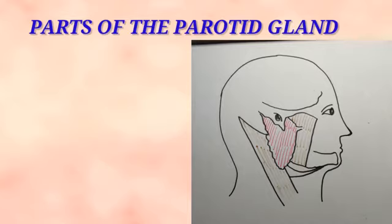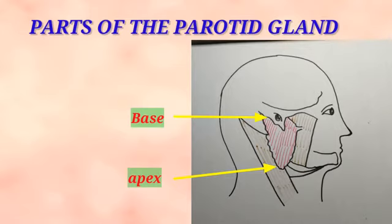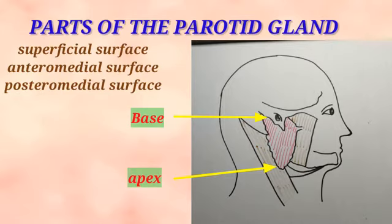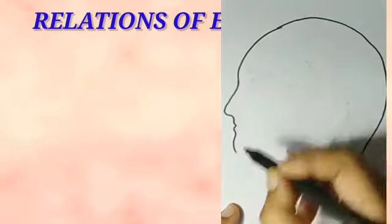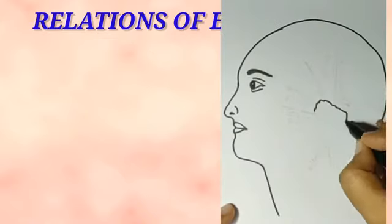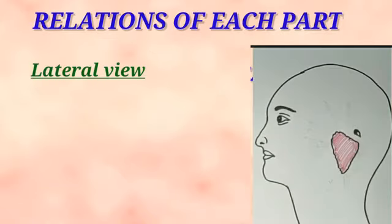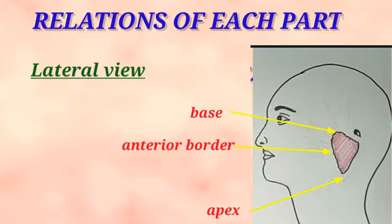Now let's see the presenting parts of the parotid gland. The gland is an inverted pyramid-shaped structure, so it has a lower end or apex and an upper part or base. It has three surfaces: superficial, anteromedial, and posteromedial surfaces, separated by three borders: anterior, posterior, and medial. We will now see the relations of each part, starting with the lateral view of the parotid gland showing the relations of the apex, base, anterior border, and posterior border.